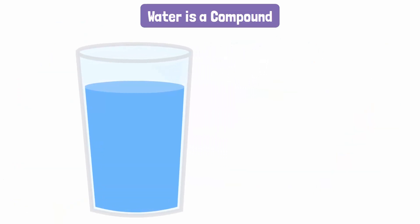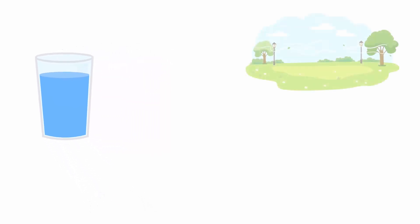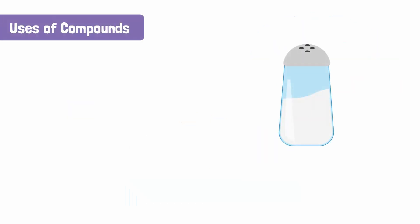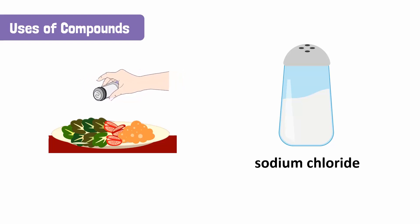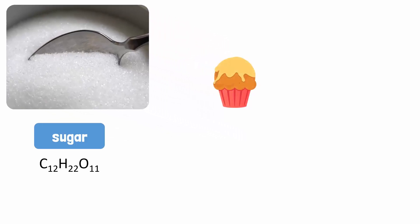Water is also essential for our survival. It is a compound made up of hydrogen and oxygen atoms. Like air and water, we use many other compounds and mixtures in our daily lives. The common salt used in food is a compound known as sodium chloride, represented by the chemical formula NaCl. Table sugar, C12H22O11, is used to add sweetness to our food and drinks.